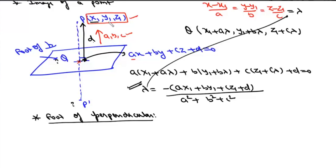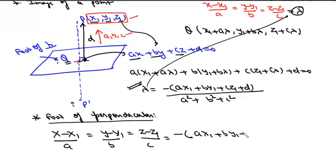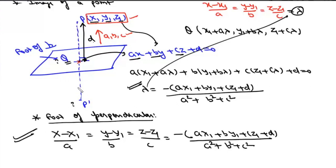The shortcut for the foot of perpendicular from point (x1, y1, z1) to plane ax + by + cz + d = 0 is: (x - x1)/a = (y - y1)/b = (z - z1)/c = -(ax1 + by1 + cz1 + d) / (a² + b² + c²). This gives us the coordinates of Q directly.